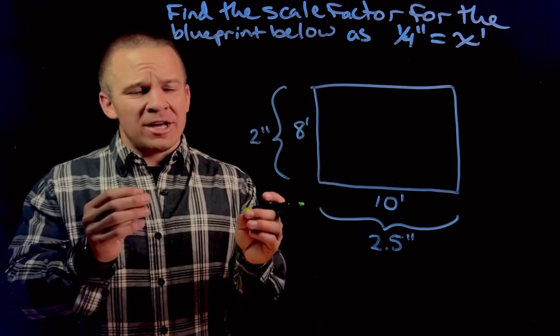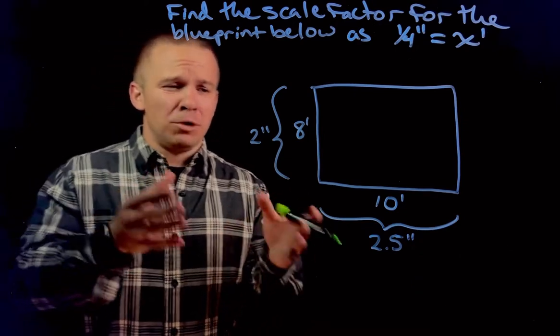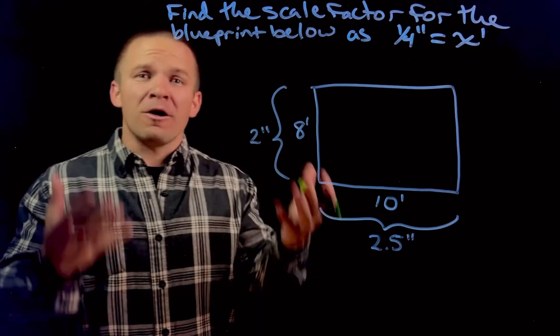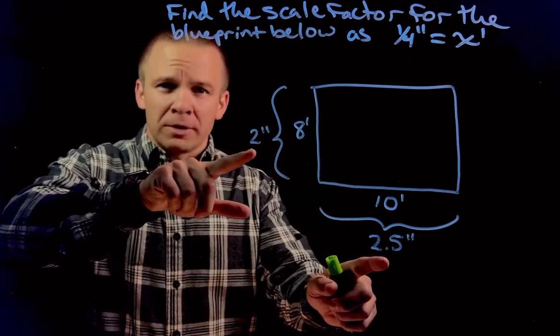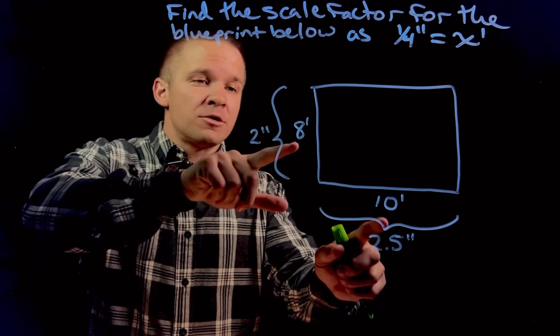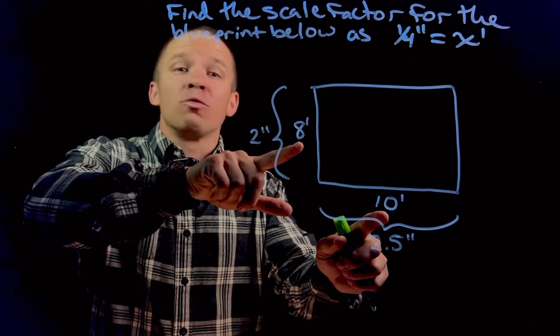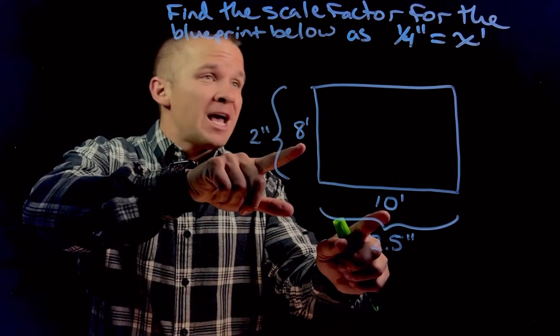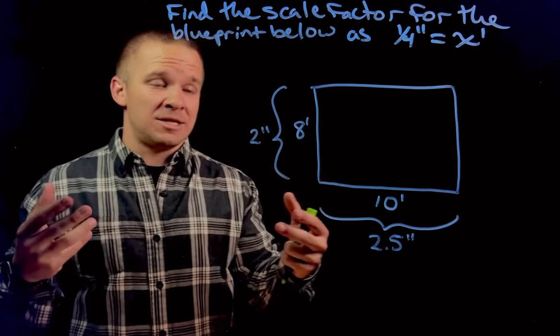Alright, so usually we're given a scale factor in a blueprint, we measure, and then we can figure out our real life dimensions. This time we're given our blueprint inches here and then also my dimensions that would be in real life, 8 foot by 10 foot. And I gotta figure out what the scale factor is in this situation.